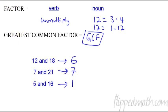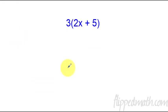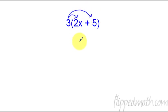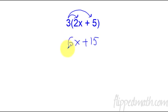Now let's put GCF to use with algebra. As a quick reminder — not in your notes — if we take the number 3 and distribute to both terms, we'd get 6x plus 15. Today's lesson is about going backwards: taking 6x plus 15 and finding the factors. That's what we're going to practice.